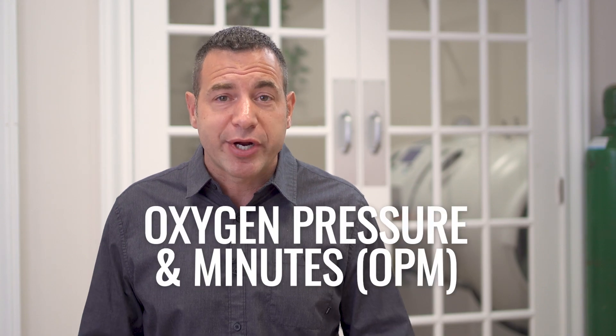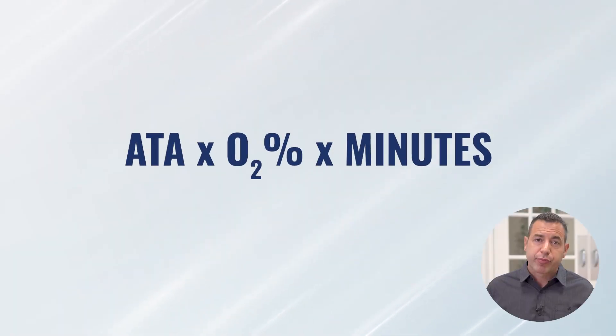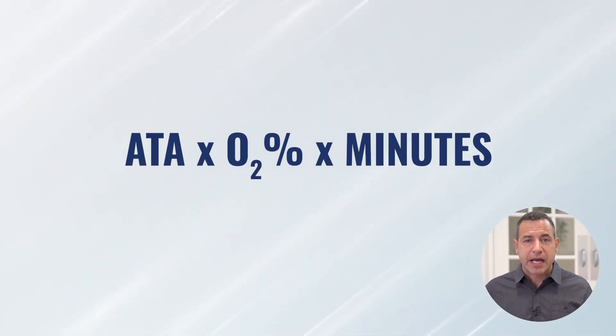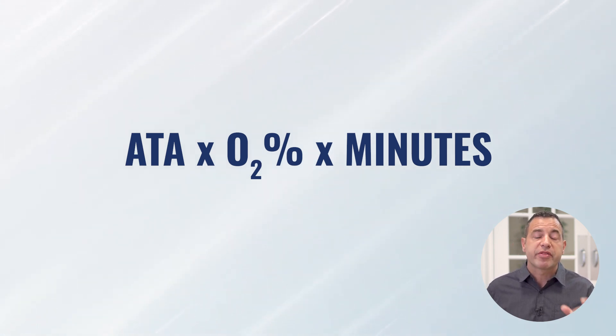When we're just casually talking about oxygen dose or explaining this to a patient, I might just say oxygen pressure in minutes. But it's literally ATA — the pressure in atmospheres absolute — multiplied by the percentage of oxygen that they're breathing, multiplied by the number of minutes that the session was. We could take any protocol, whether on-label or off-label, and break it down into oxygen tolerance units to understand the cumulative oxygen exposure a patient received over a period of time.